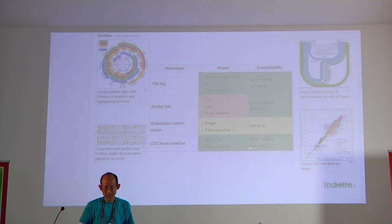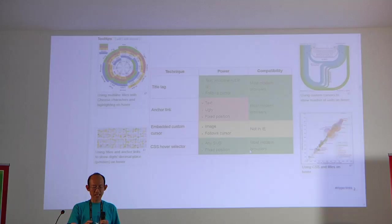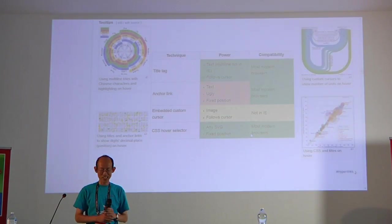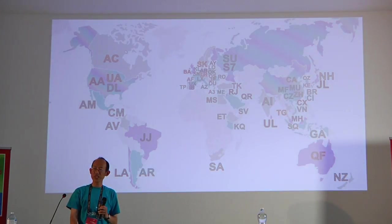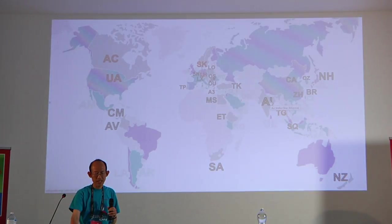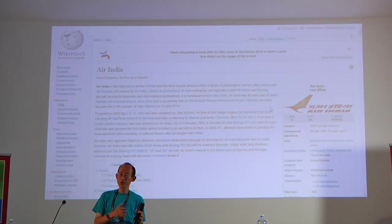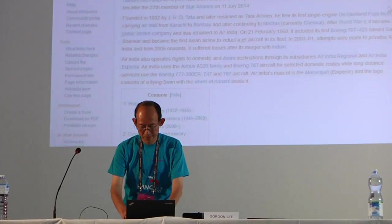These tooltips can be categorized into four methods: a title tag, an anchor link, an embedded custom cursor, and a CSS hover selector — each with pros and cons. You can also have hyperlinks. For example, if I have an SVG of a map of airline alliances, I can click on Air India and it loads up the Air India Wikipedia page. So SVG is useful not just for interactivity, but also for hyperlinking to more information.